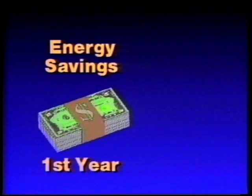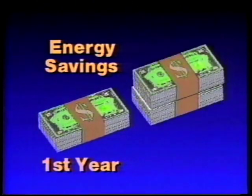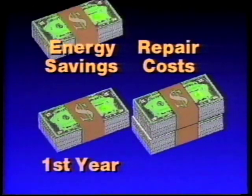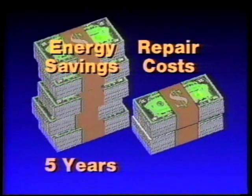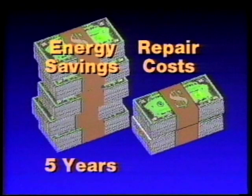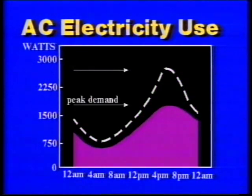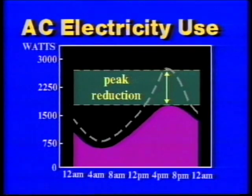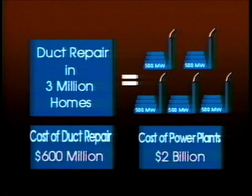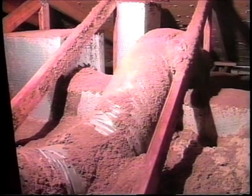Fortunately, duct repair can substantially reduce this energy waste. Based on research in Florida, duct air tightening can save $110 per year. Since the cost of such repair is in the range of $100 to $400, it can pay for itself in about two years. Duct repair can also lower air conditioning electricity use during the utility's peak demand period, reducing the number of power plants needed. It is estimated that duct repair in three million Florida homes, at a cost of about $600 million, could eliminate the need for five large power plants costing about $2 billion.